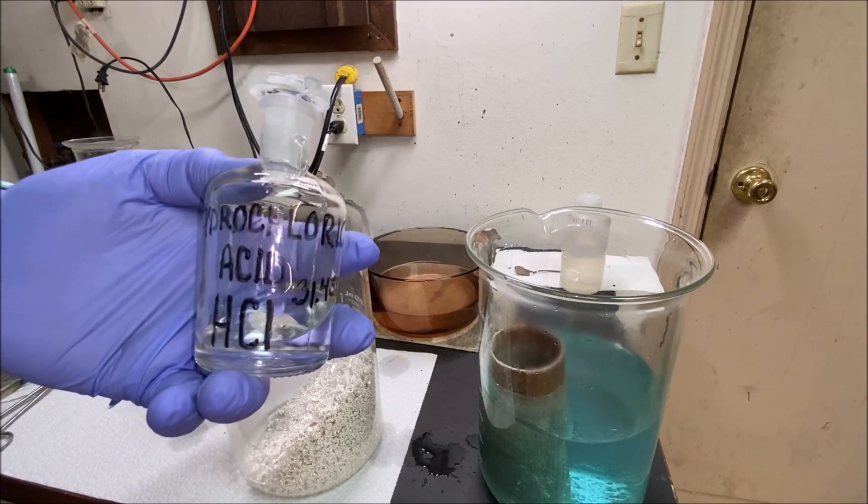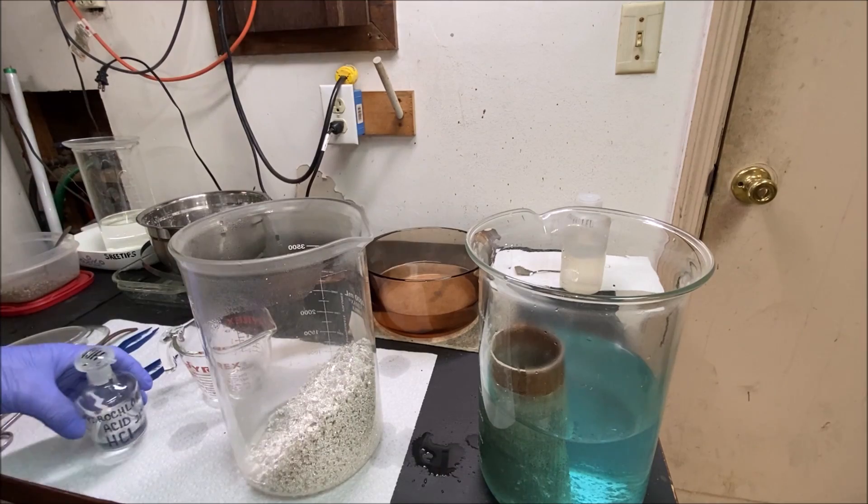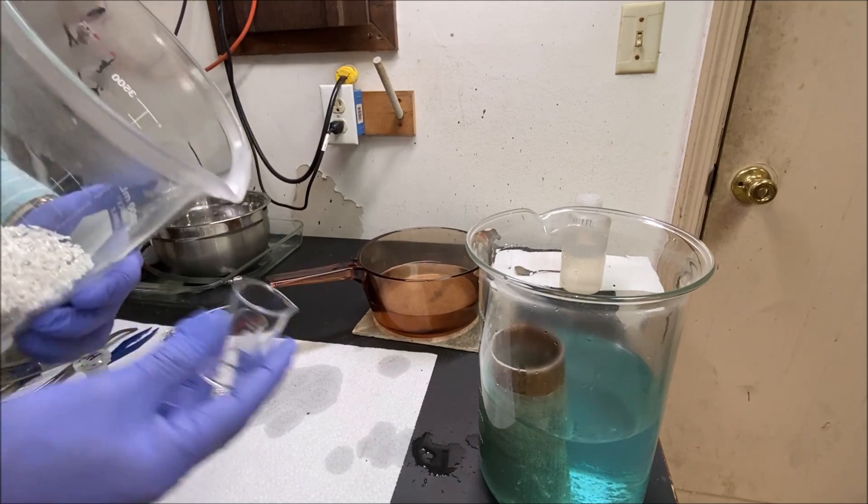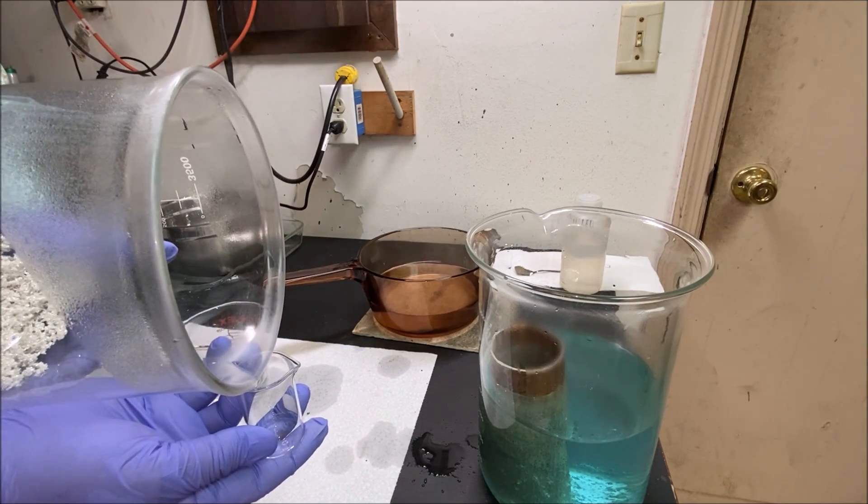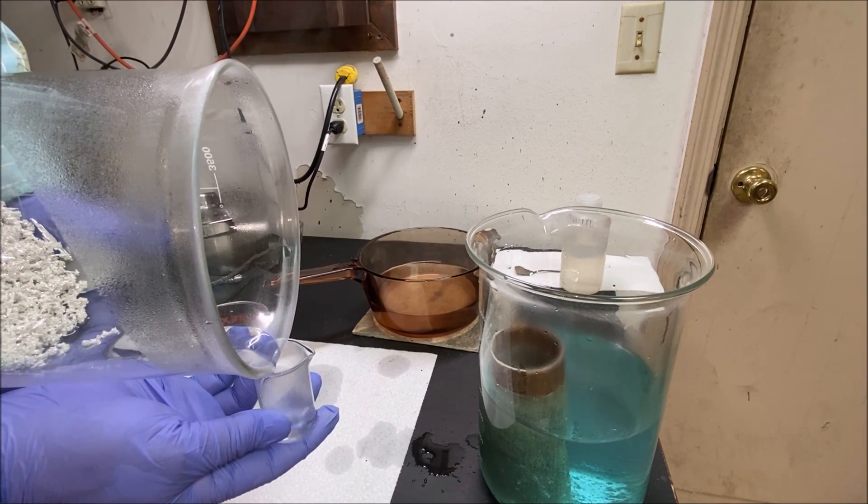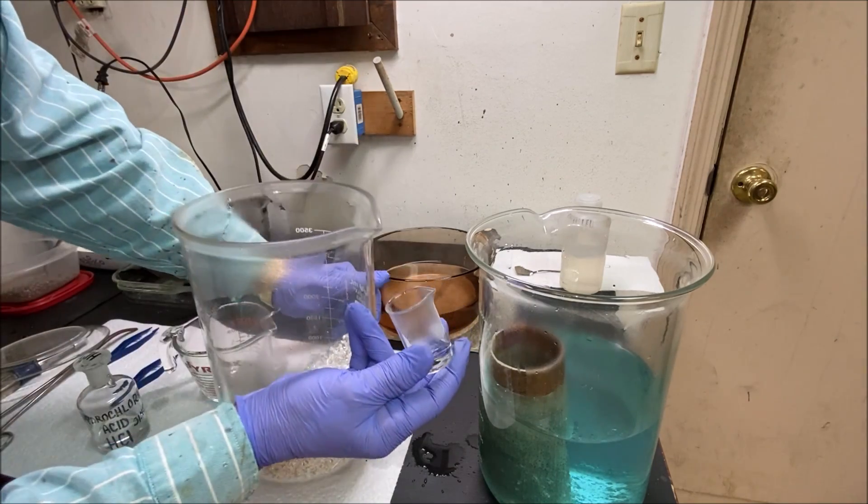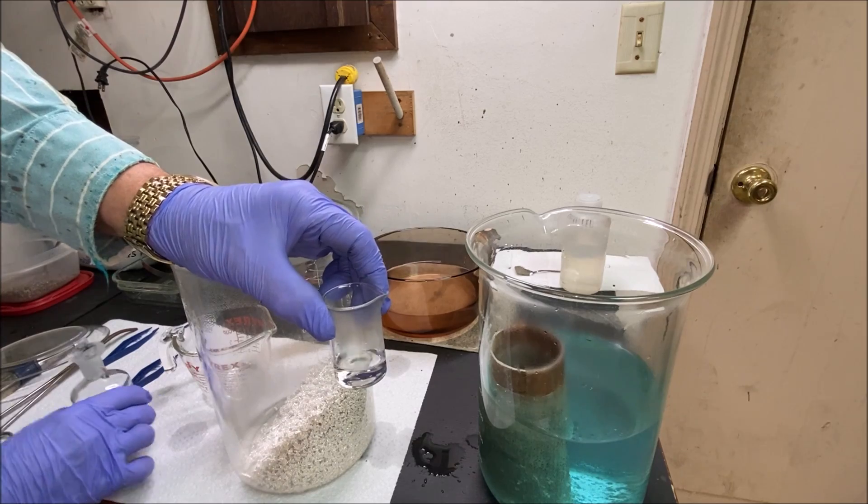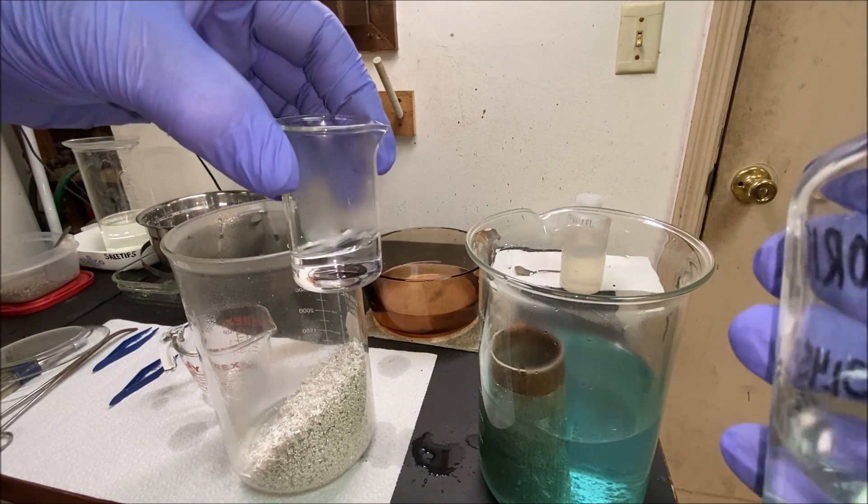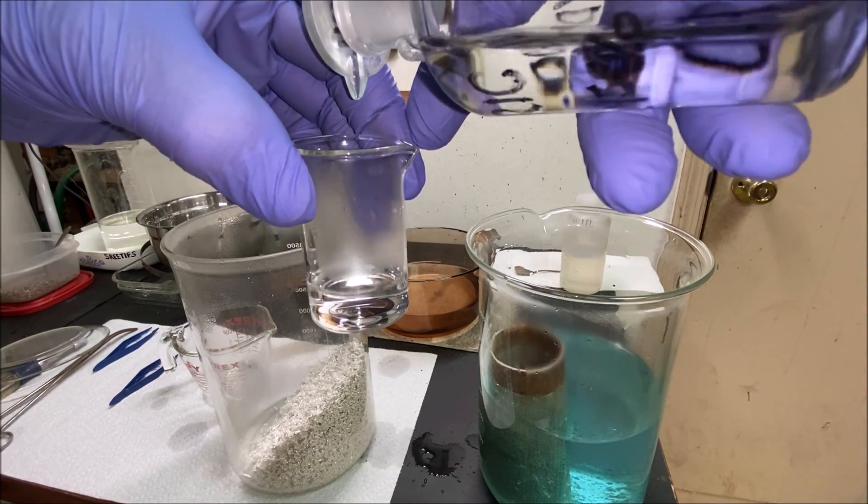I've got some hydrochloric acid here and a small beaker. So what I'll do is I'll get some of this rinse water off of our silver and we're going to test it for the presence of silver nitrate with the hydrochloric acid.